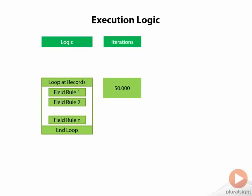So for example, if we have 50,000 records in the source, the field rules are executed 50,000 times for each record. Any logic we write in such a rule will be executed 50,000 times in this example.